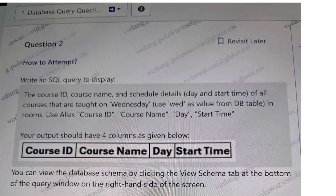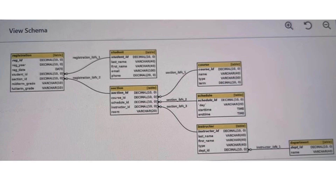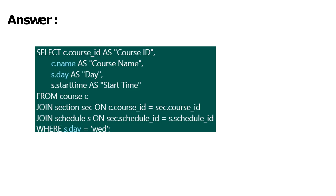Question 2 in the SQL section: Write an SQL query to display the Course ID, course name, and schedule details — day and start time. You can view the database by clicking the View Schema tab at the bottom of the query window. The schema provided by the question is shown here. According to this schema, we have to write the query. This is the sample answer for question 2 — you can refer to this answer.